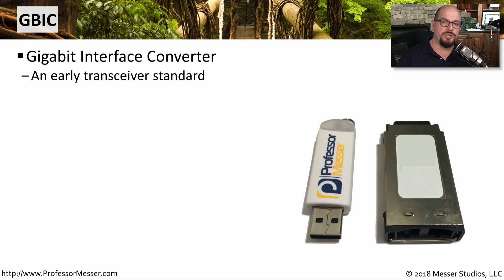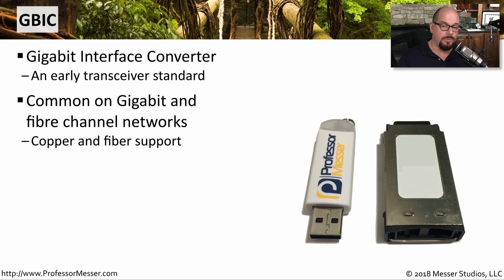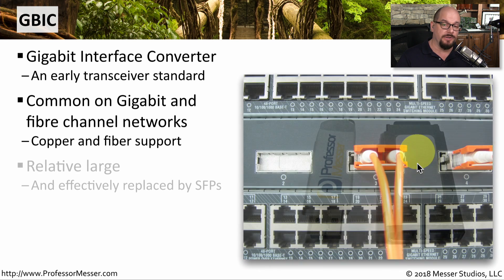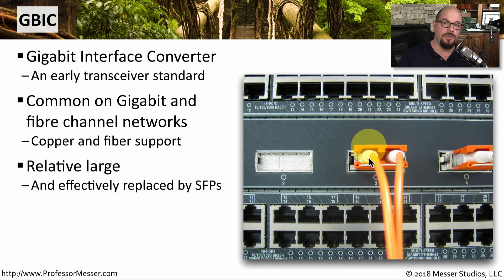One of the earlier transceiver standards was created for gigabit networks. This was the GBIC, or the Gigabit Interface Converter. You can see the GBIC right here next to this USB key. It usually is connected with something like an SC connector onto the GBIC itself. These are commonly used on gigabit networks and fiber channel networks, but they are relatively large compared to some of the newer styles of transceivers. Here's a GBIC being used with SC connectors in this gigabit Ethernet switch. You can simply slide the GBIC into an open slot, connect your fiber, and now you've got a fiber connection using this modular transceiver.